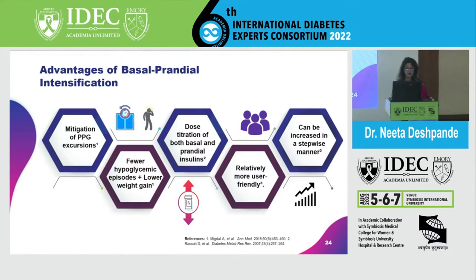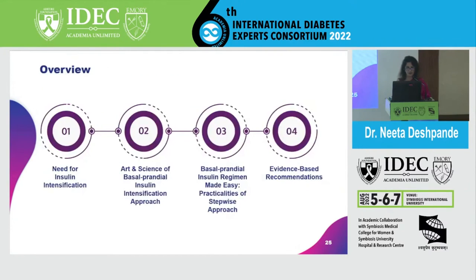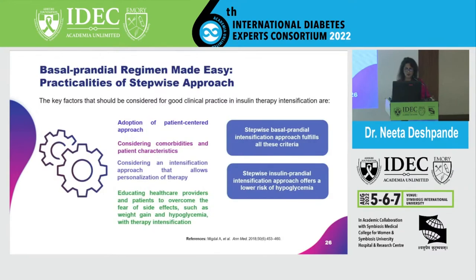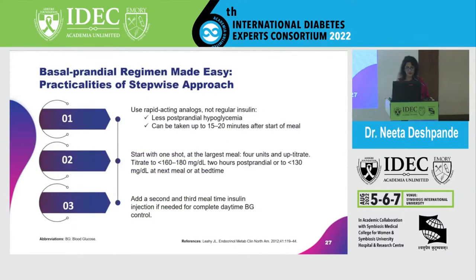The advantages of basal-prandial intensification are: PPG excursions are prevented, there are fewer hypos because you can titrate the dose very well, and you therefore also have lower weight gain. You can titrate both basal and prandial separately, which is very desirable, making it more user-friendly and doable in a step-wise manner. This step-wise approach is patient-centered, takes care of co-morbidities and patient characteristics — whether someone has nephropathy or cannot take a particular drug — everything is considered. It is personalized designer therapy, and it educates healthcare providers and patients to overcome the fear of side effects such as weight gain and hypoglycemia with therapy intensification.